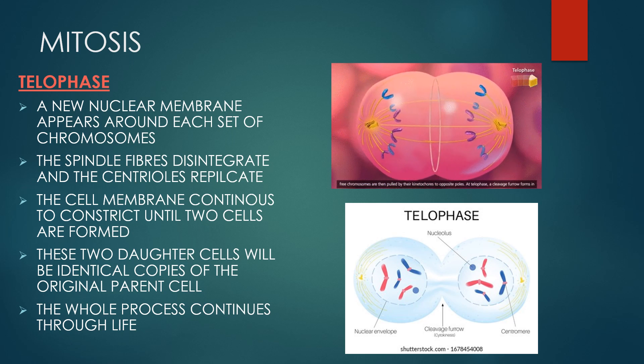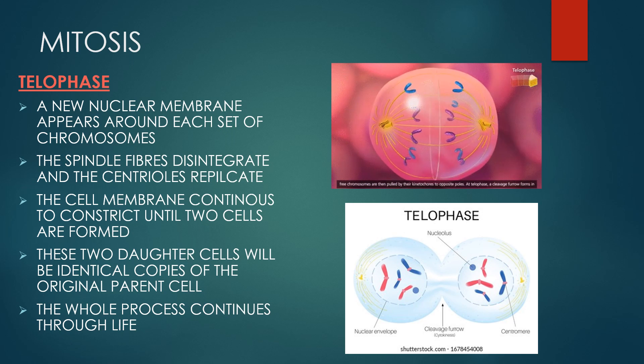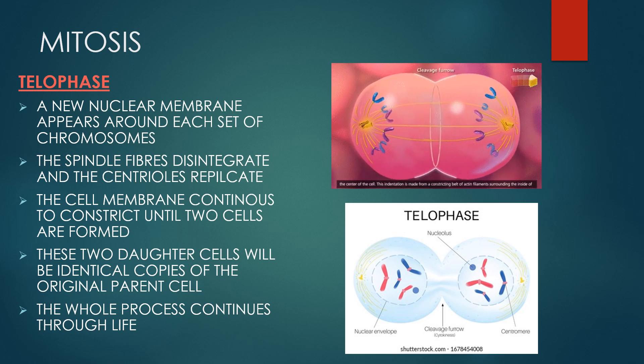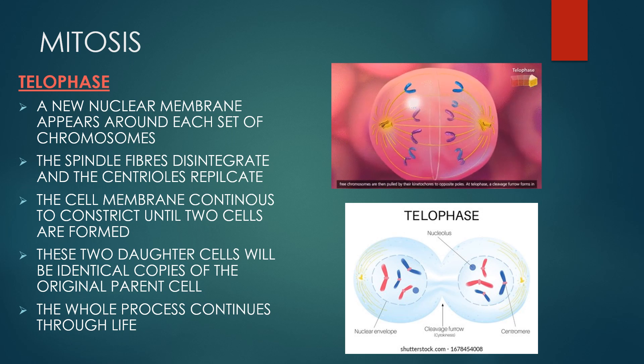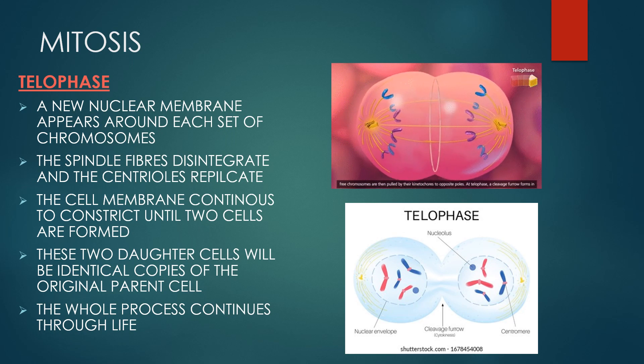Telophase is the fifth and final phase of mitosis, the process that separates the duplicated genetic material carried in the nucleus of a parent cell into two identical daughter cells. Telophase begins once the replicated chromosomes have been separated and pulled to the opposite sides or poles of the cell. A new nucleus membrane appears around each of the chromosomes. The spindle fiber disintegrates and the centrioles replicate. The cell membrane continues to constrict until two cells are formed. These two daughter cells will be identical copies of the original parent cell and the whole process continues throughout life.